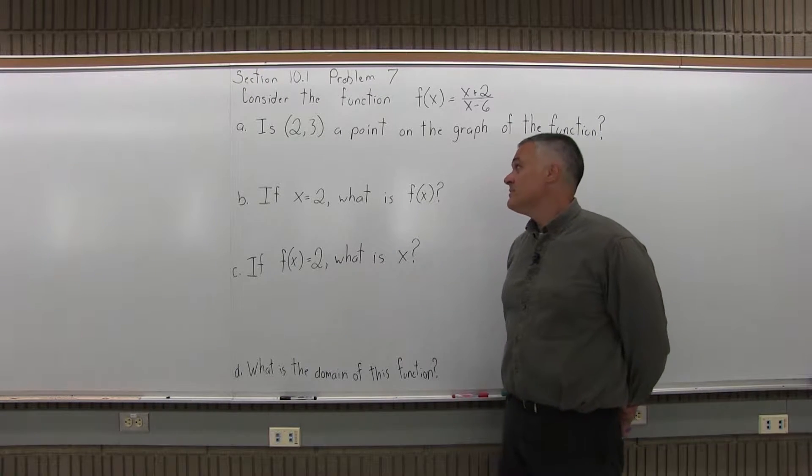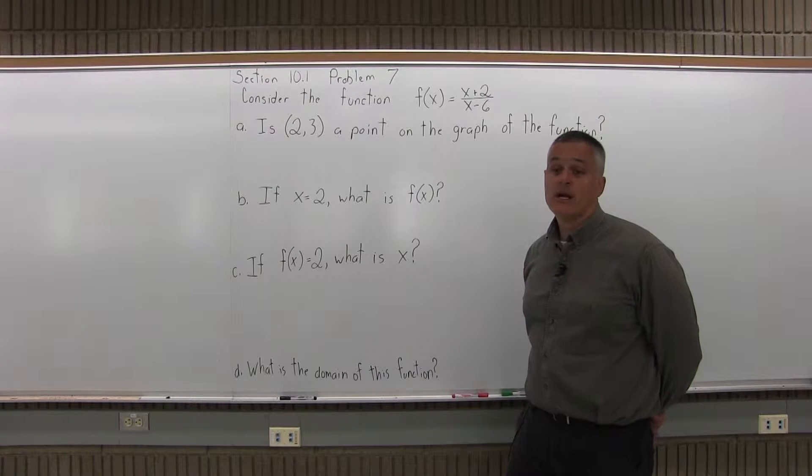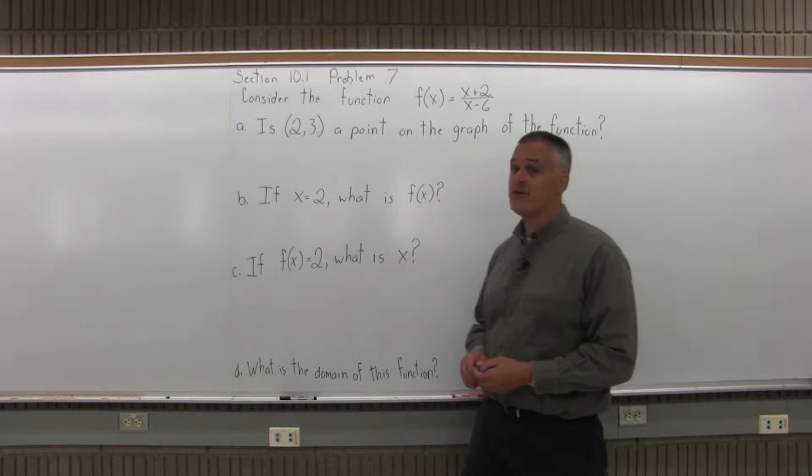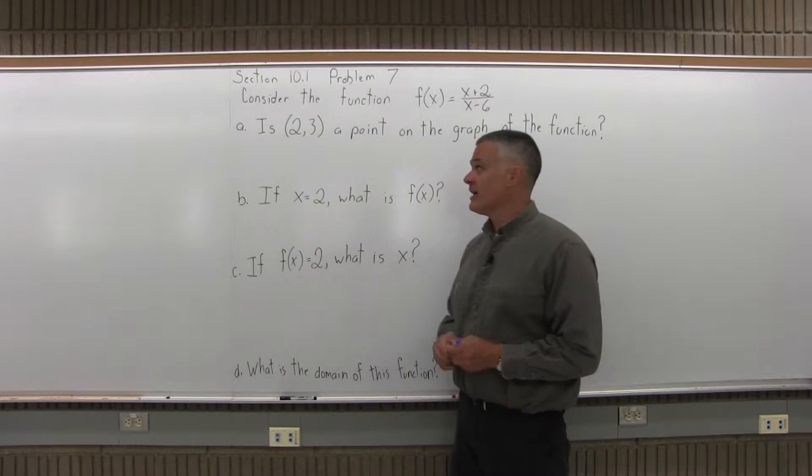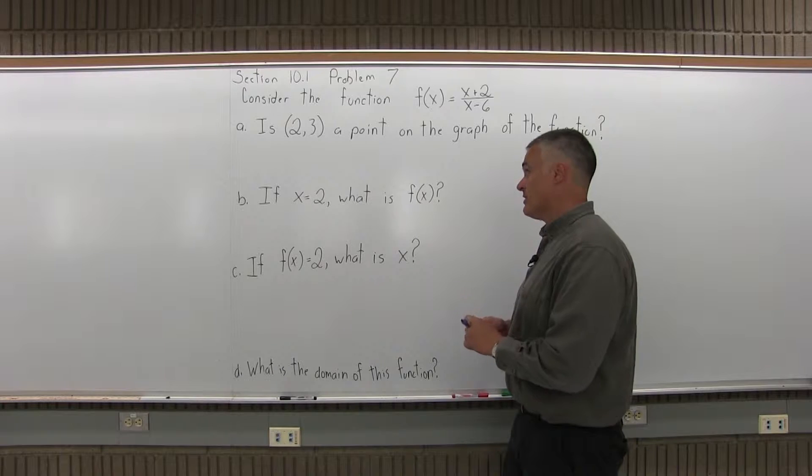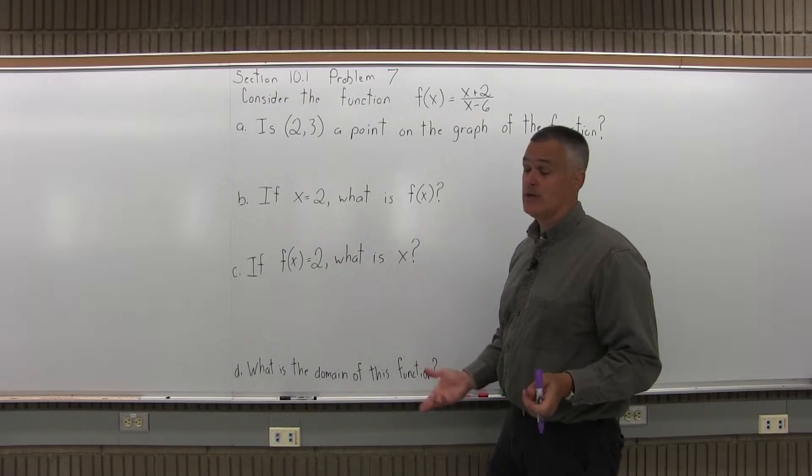They're basically asking, if you put in a 2, do you get out a 3? If we had the graph of the function, you could just look at the graph and determine, but you're not given the graph of the function. So, with some math, you can see if you put in a 2, do you get out a 3, or do you get out something else?